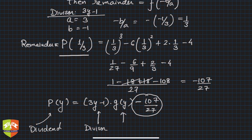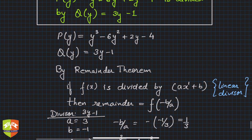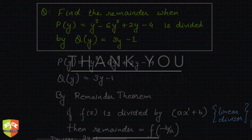G(y) is the quotient - we don't know what it is, but we're not interested in it. The remainder is -107/27. We found the remainder without actual long division. This is the application of the remainder theorem.